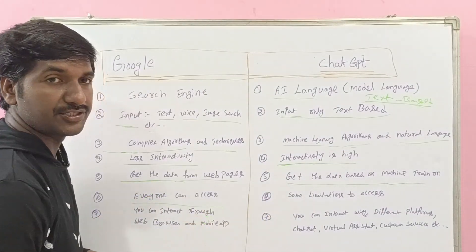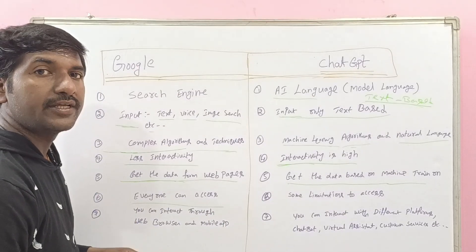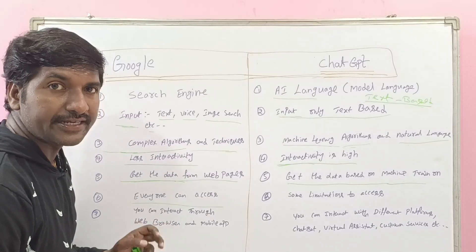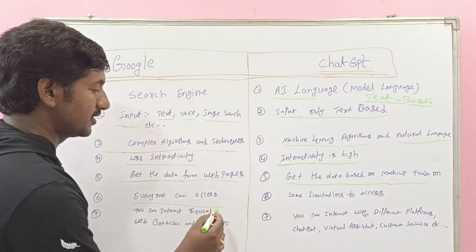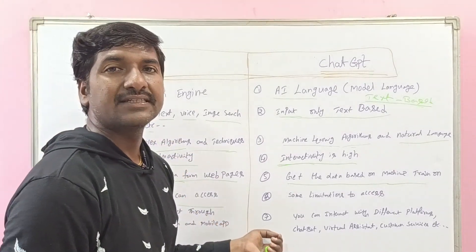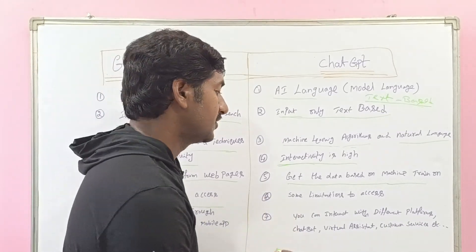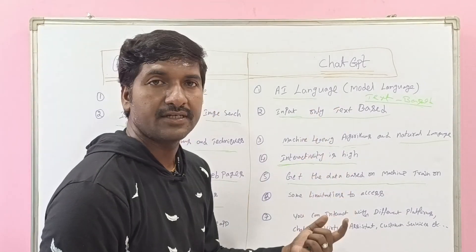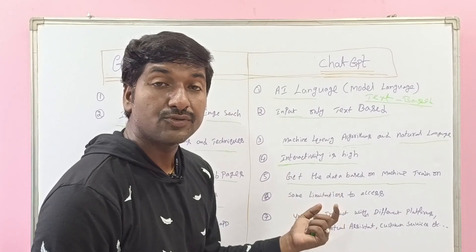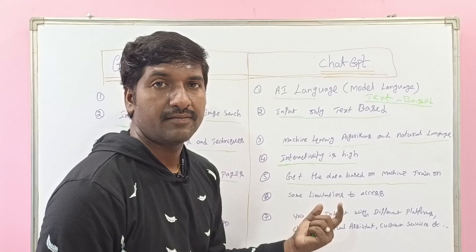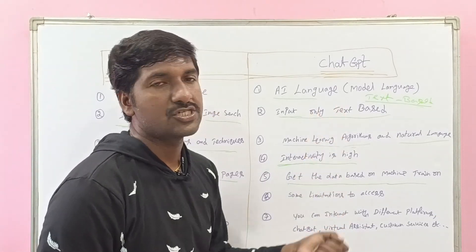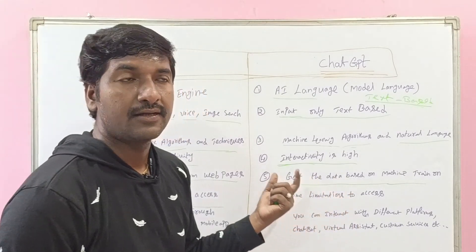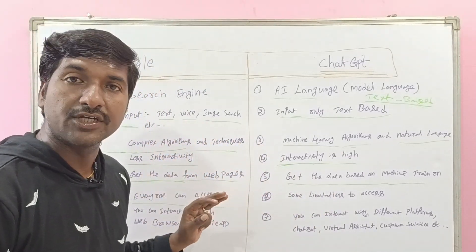The next major difference is accessibility. Everyone can access Google search engine — not only professionals, but even non-technical users. But for ChatGPT, some limitations exist. ChatGPT has introduced a pro version, which means you have to pay a monthly amount to use it. Google search engine, however, is completely free of cost.